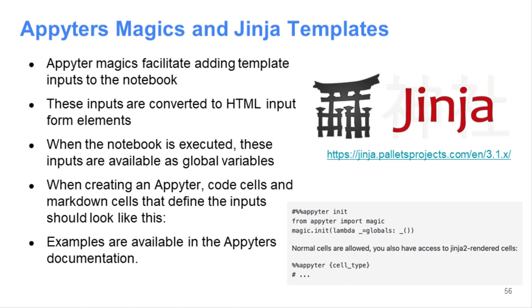To set up those additional parts, which are called Appyter magics, we use the Jinja templating language. It's similar to PHP in that it's a way to add templating into your code. This is what it looks like — it has this pound-percent, percent type of closing and opening segments. In there, you specify the templating and what you want to put in.